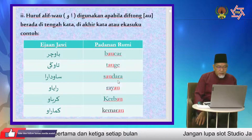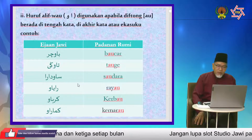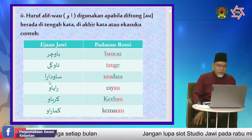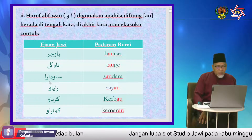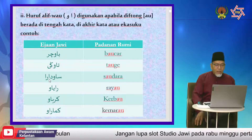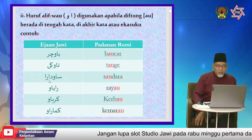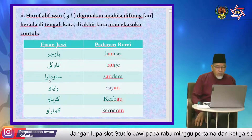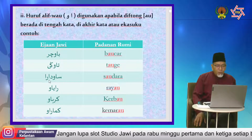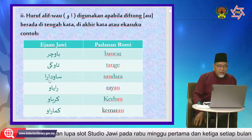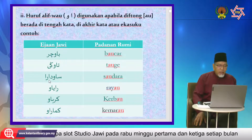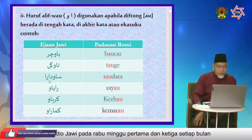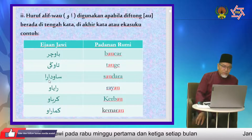Kemudian perkataan 'saudara': ejaan lama sin, wau, da, alif, ra, alif — S-A-U-D-A-R-A, saudara. Perkataan 'rayau': ejaan Jawi ra, alif, ya, alif, wau — padanan rumi R-A-Y-A-U, rayau. Ejaan lama: ra, alif, ya, wau sahaja — bacanya 'rayu', tapi maksud dia nak 'rayau'. Dalam rumi padanan R-A-Y-A-U.